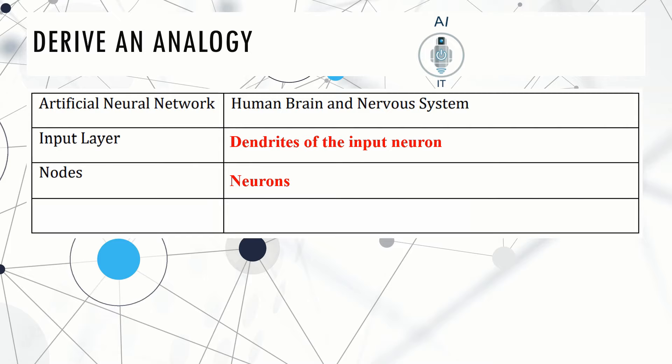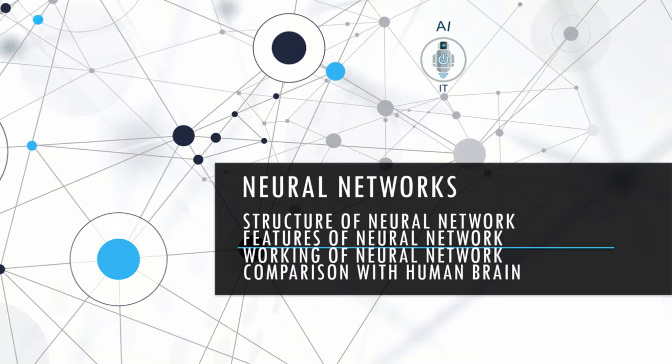The input layer of neural network can be compared to the dendrites of the input neuron in the human brain and nervous system. The nodes can be compared to the neurons, and the output layer can be compared to the axon terminals of the output neuron.